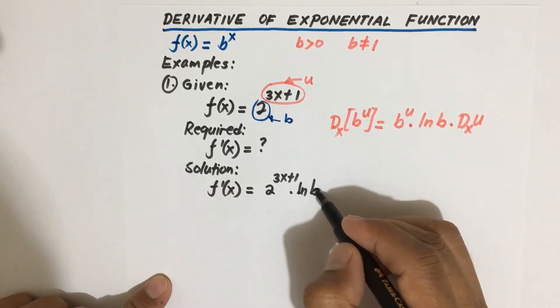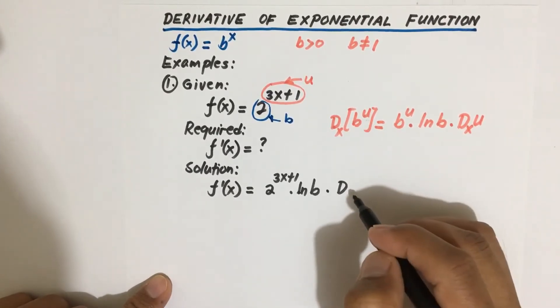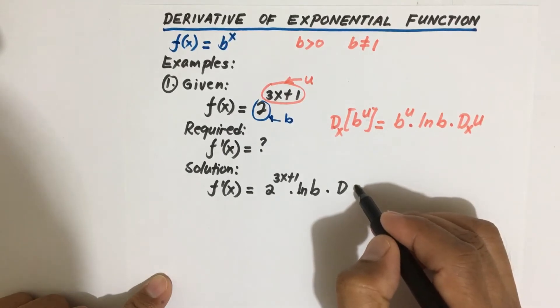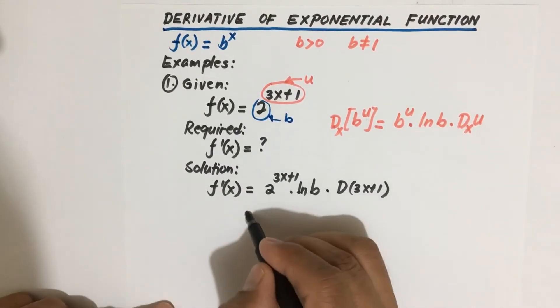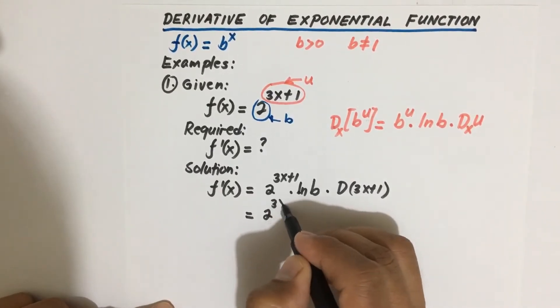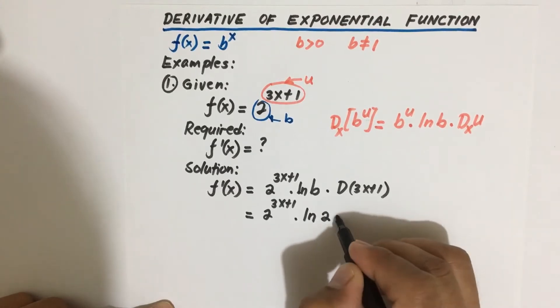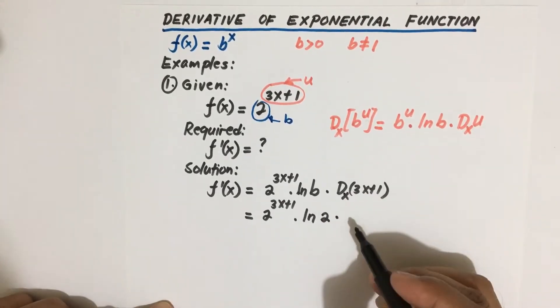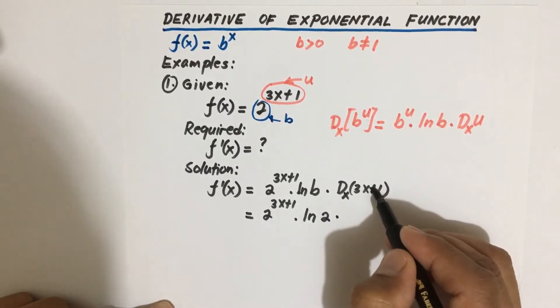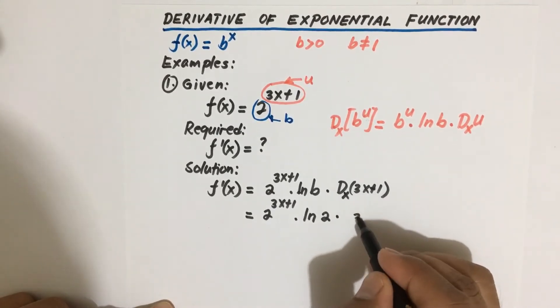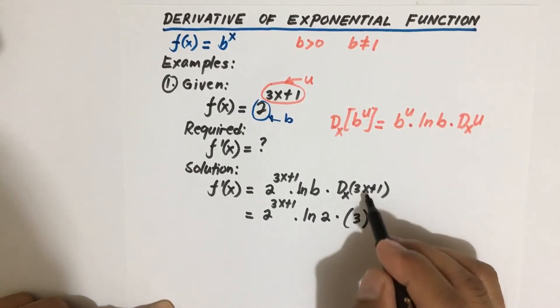I will write it later because in the next line, times the derivative of u. We will use the sum rule of differentiation. U is 3x plus 1, so 2 to the 3x plus 1 times ln 2. By the way, this is with respect to x. So we will use the sum rule of differentiation. Derivative of 3x is 3 times the derivative of 1 is 0, so we only have 3 here. So derivative of the quantity 3x plus 1 is simply equal to 3.